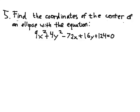For number 5, we're given an enormous equation, and we have to find the coordinates of the center of the ellipse. To do this, we should try to rewrite this equation in the form that we're used to. So, it looks like we may need to do some completing the square.